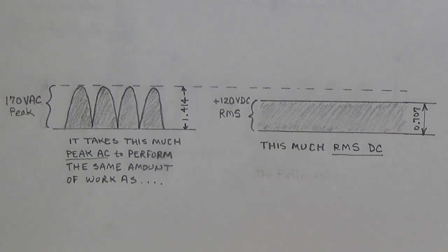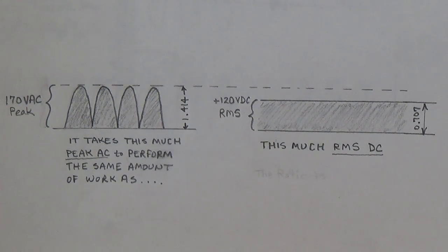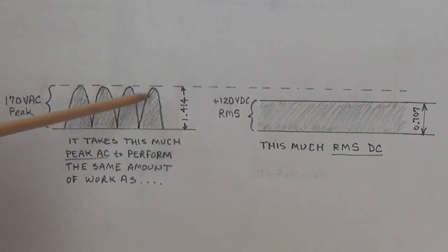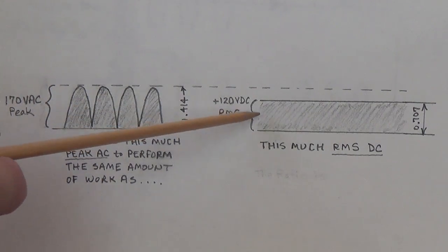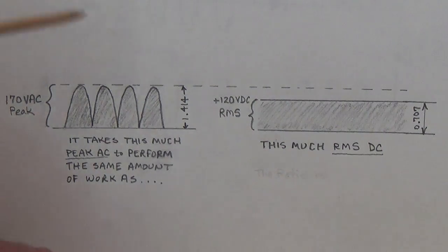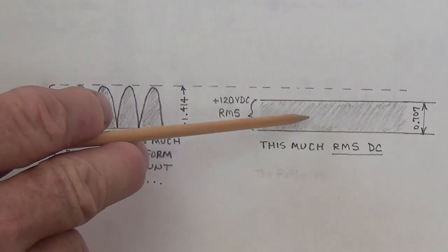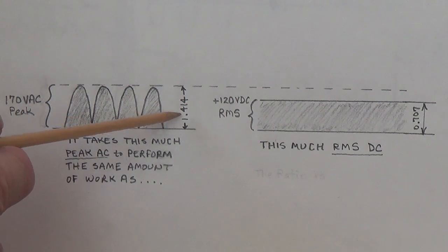Greetings and welcome to this part 2 video in the power supply series. In part 1 we talked about the difference between RMS and peak voltage. We saw that peak voltage cannot do as much work as RMS voltage because there are empty spaces between the waveforms, and it takes a lot more peak voltage, in this case 170 volts AC peak, to do the same amount of work as 120 volts of RMS voltage. We saw the conversion factors: if you're going from peak to RMS you multiply times 0.707. If you're going from RMS to peak you multiply times 1.414.